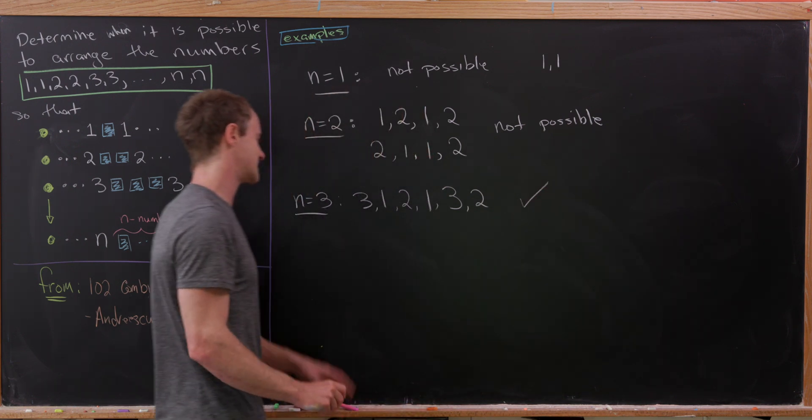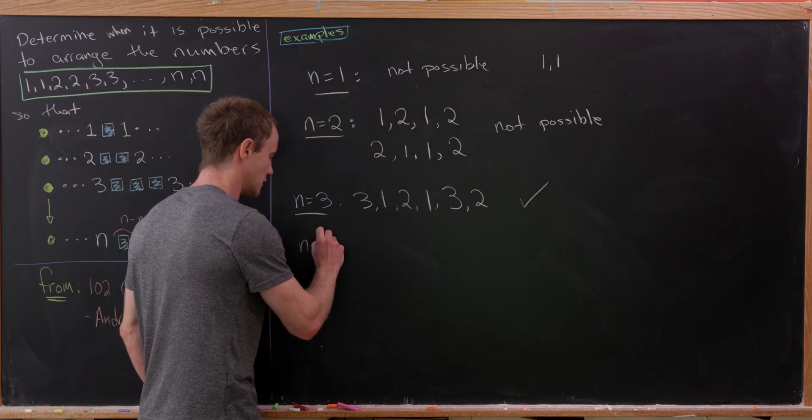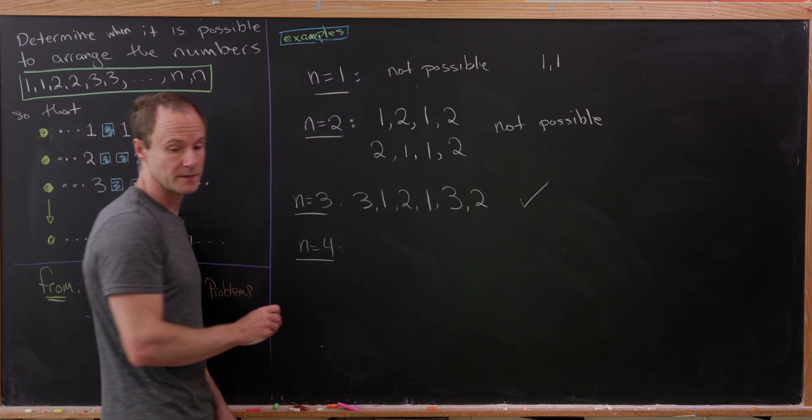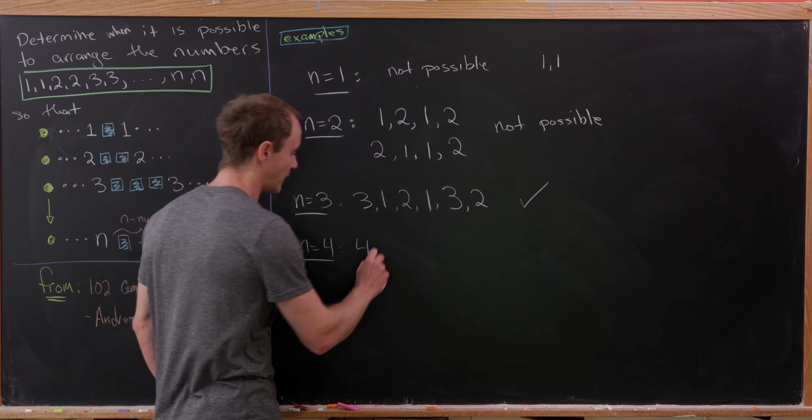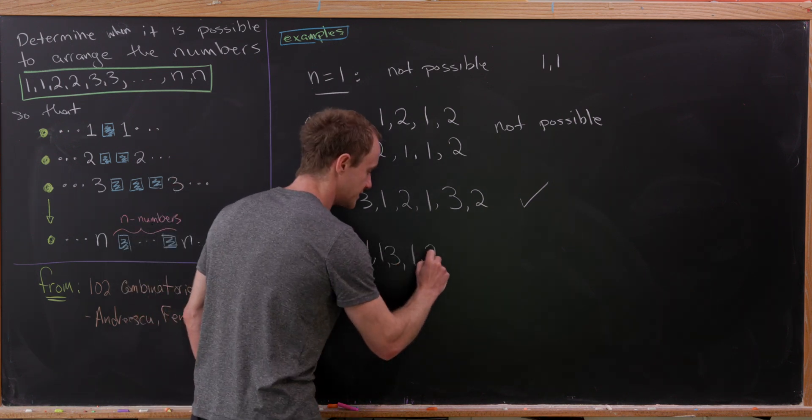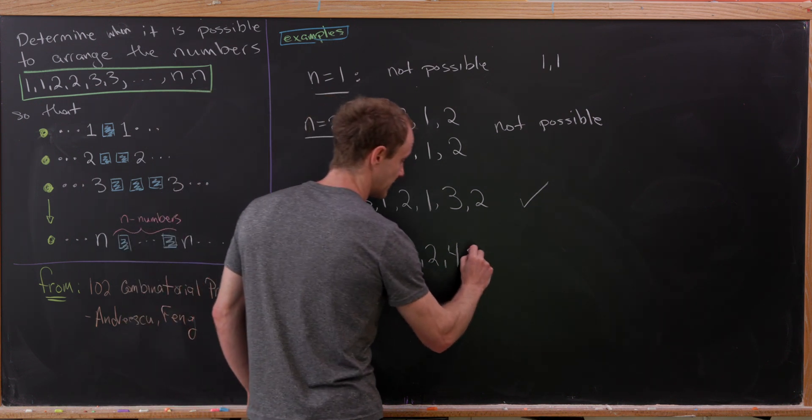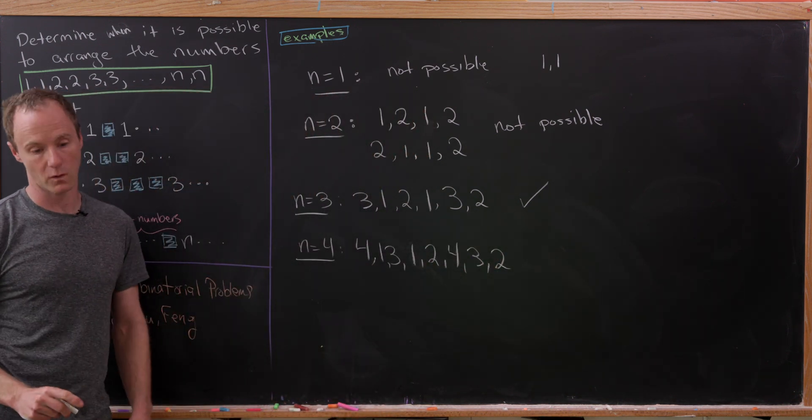So it works out in this case. It's possible if N is equal to 3. Now let's look at N equals 4. I'll just say that it's possible in this case as well, exhibited by the following: 4, 1, 3, 1, 2, another 4, and then after that, we'll need a 3 and then a 2.